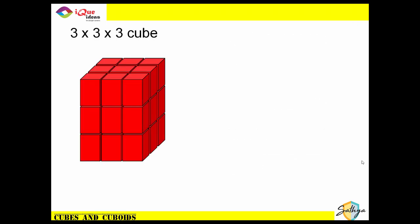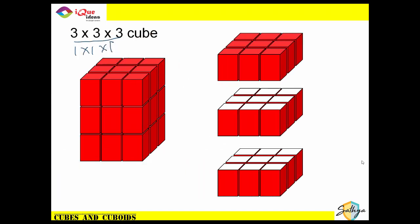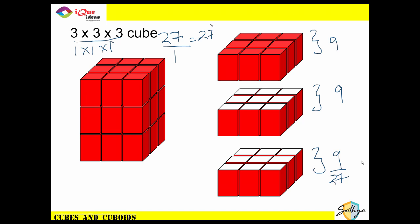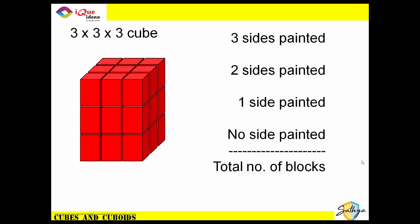Moving on to a 3x3x3 cube. Total number of pieces when split into 1x1x1 blocks: separating the three layers, each layer has nine blocks, so nine plus nine plus nine equals 27 blocks total. Alternatively, 3×3×3 divided by 1×1×1 equals 27. For three sides painted, there are eight original vertices, so eight blocks with three sides painted. We need all counts to add up to 27.